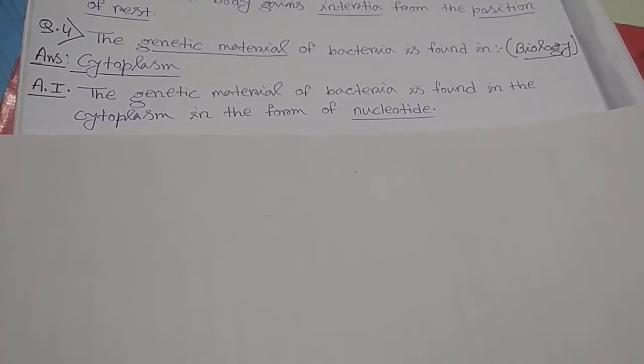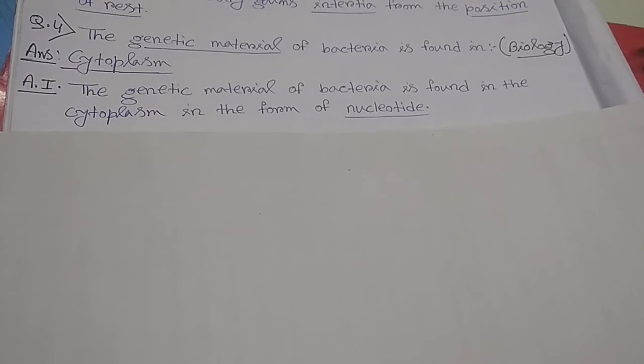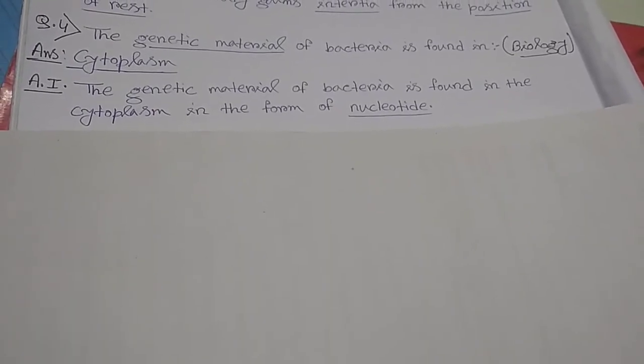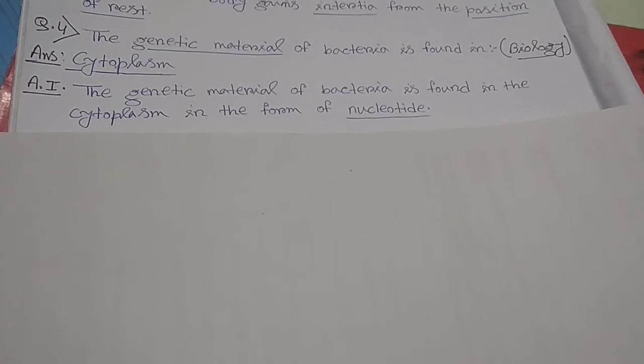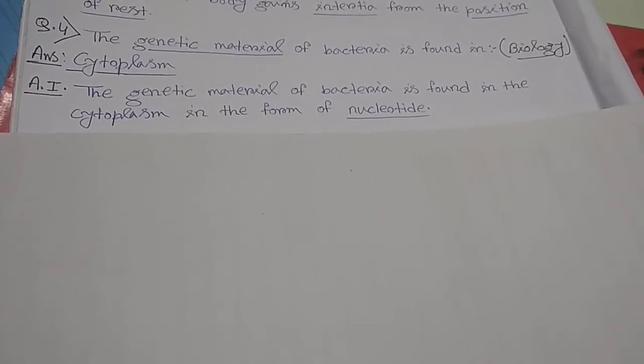Question number 4. The genetic material of bacteria is found in cytoplasm. The genetic material of bacteria is found in the cytoplasm in the form of nucleotide.